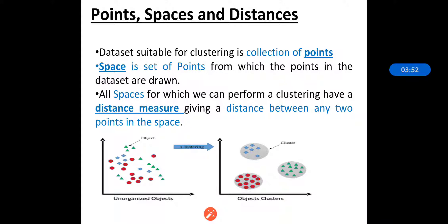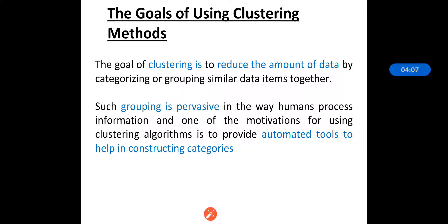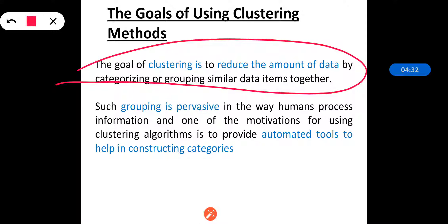Generally, clustering is conceptual clustering where two or more objects belong to the same cluster if it defines a concept common to all objects. Objects are grouped according to properties that are common between them. The goal behind using clustering methods is to determine the intrinsic grouping in a set of unlabeled data. In general, the goal of clustering is to reduce the amount of data by categorizing or grouping similar data items together.